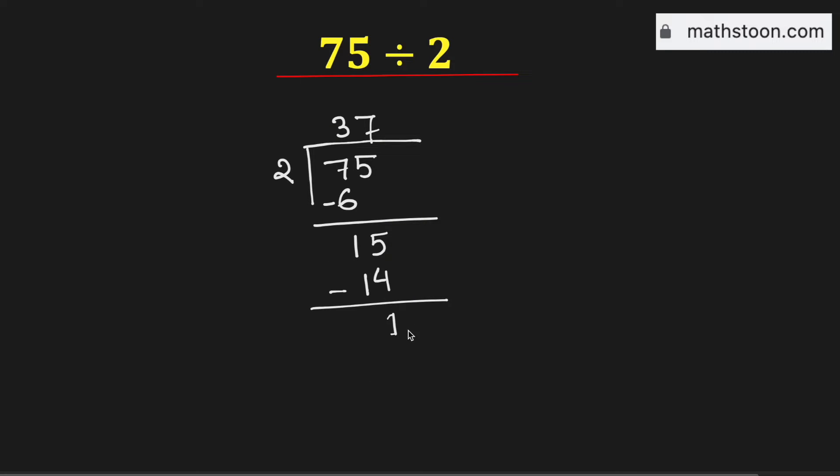Again 2 cannot go into 1. So we need to put a decimal here so that we can get 0. Now 2 times 5 is equal to 10. Now subtract this we get 0 here.